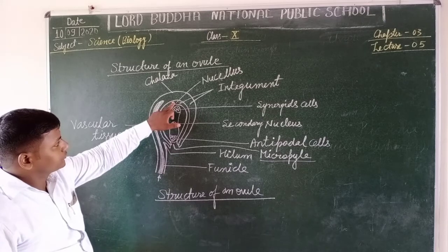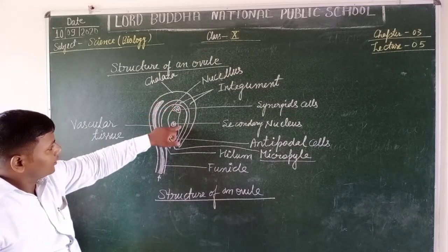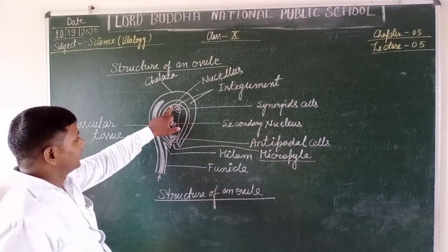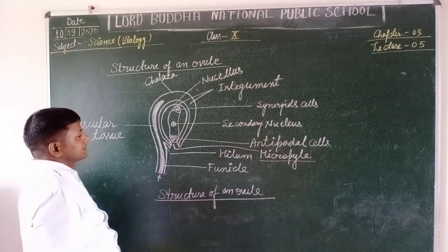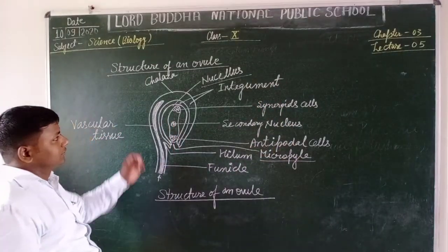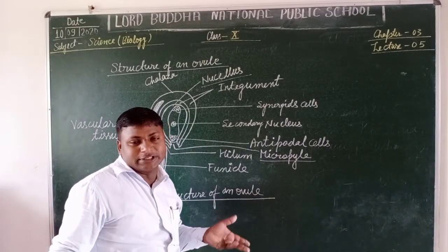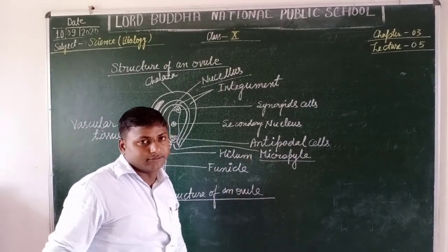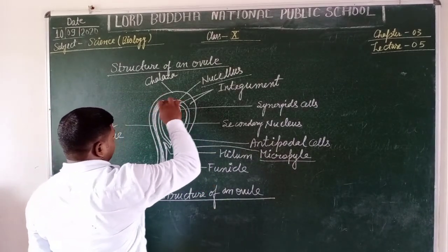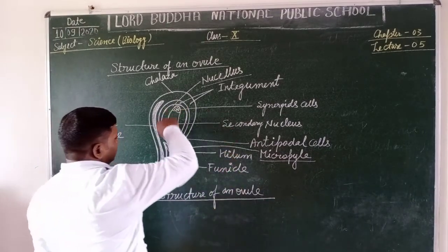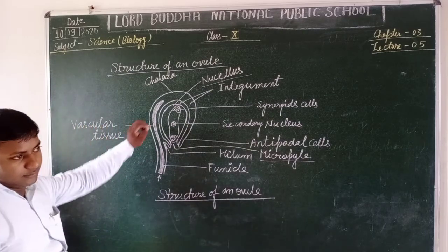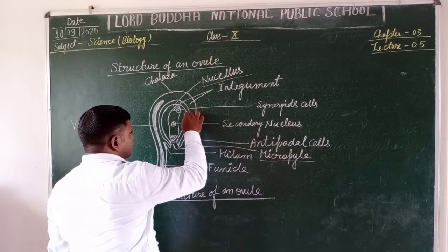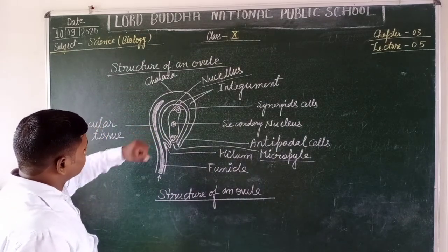In between the integument and the chalaza, there is a presence of parenchymatous cells that form the endosperm layer of the ovule — this is called the nucellus. The nucellus contains nutritious storage substances that help in the development of the ovule and the further process of fertilization. The endosperm layer, after the complete process of fertilization, gets converted into the cotyledon layer of the food seed.